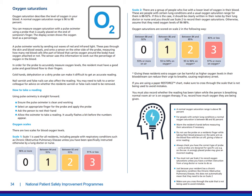Oxygen saturation describes the level of oxygen in your blood, and a normal oxygen saturation range is between 96 to 98 percent. You can measure oxygen saturations with a pulse oximeter using a probe placed on the end of someone's finger. These probes work by sending out waves of red and infrared light that pass through the skin and blood vessels onto a sensor on the other side of the probe. For the probe to accurately measure oxygen levels, the resident must have a good pulse and good blood flow to their fingers. Cold hands, dehydration, or a dirty probe can make it difficult to get an accurate reading. Nail varnish and false nails can also adversely affect the reading. You need to make sure the equipment is clean and working, select an appropriate finger, ask the person to rest their hand, and allow the oximeter to take a reading.